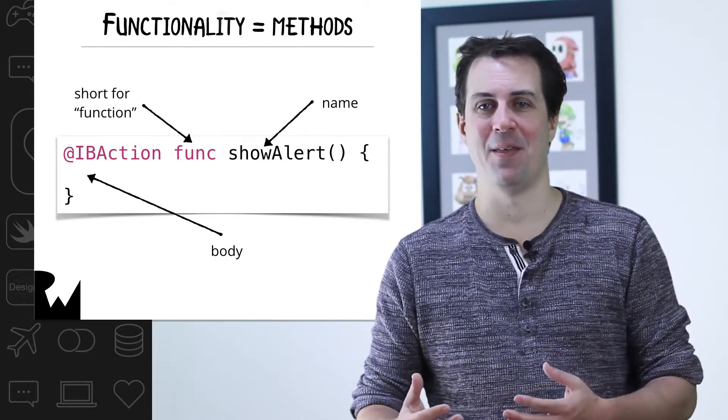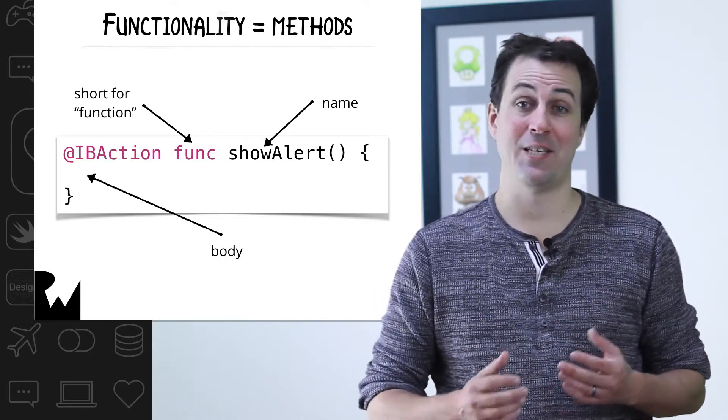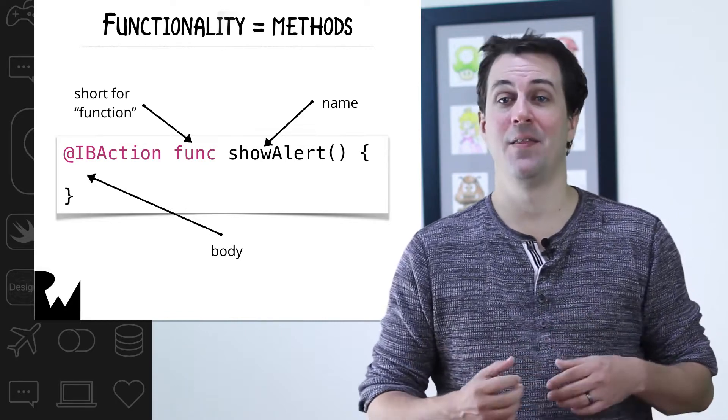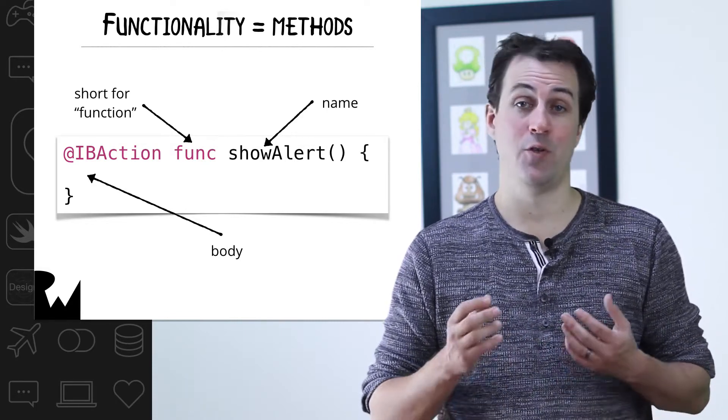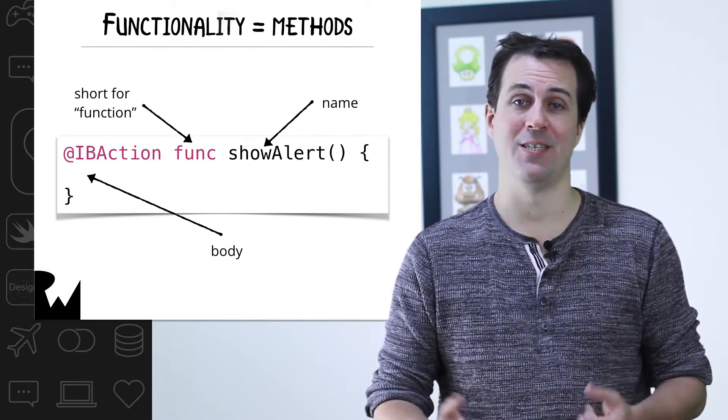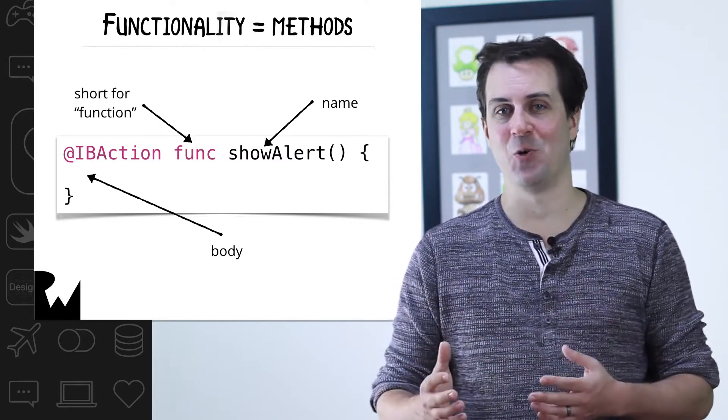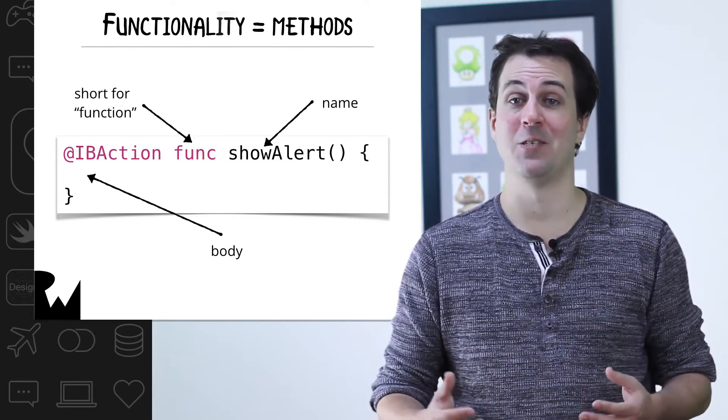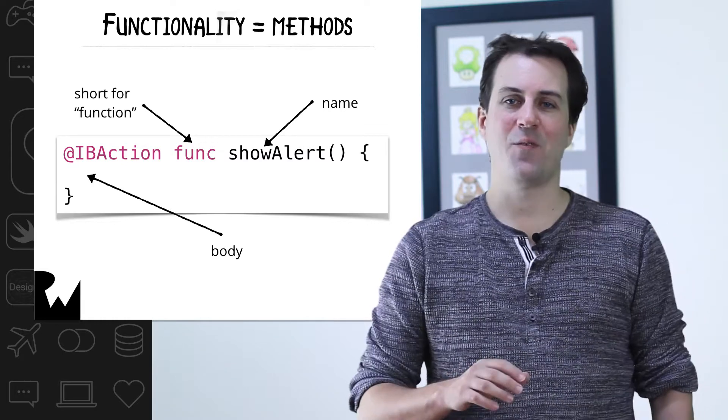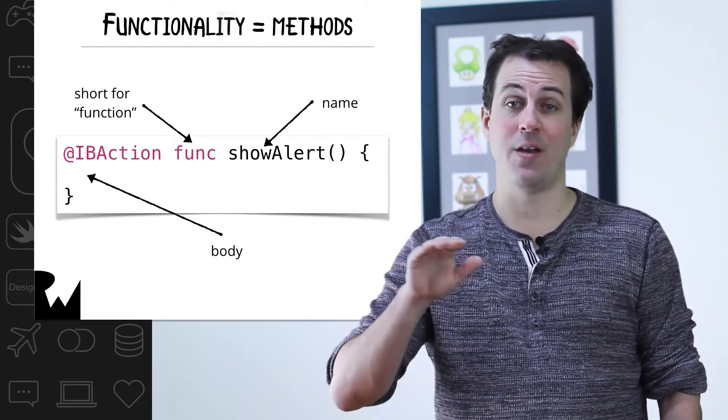Your show alert action is an example of a method. You can tell it's a method because the line says func, again short for function, then you have the name of the method, and then two parentheses where you put the parameters inside. Then you have an area inside curly braces where you put your code. This is known as the body of the method. Each line of code you add to the body will be executed one after the other.